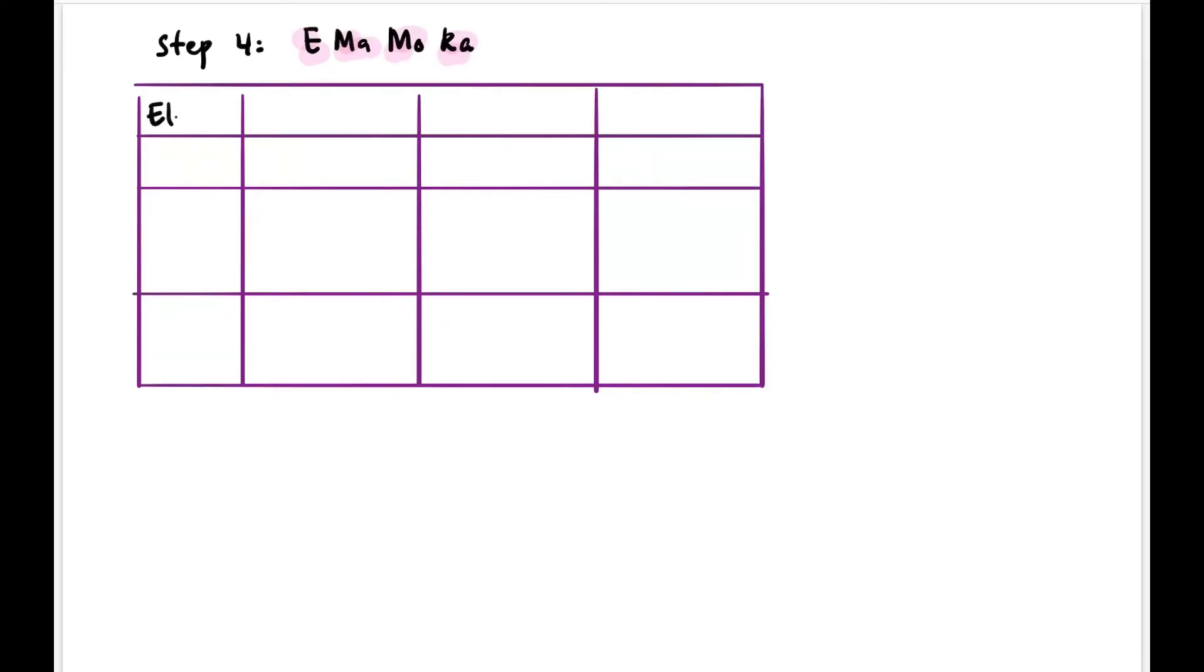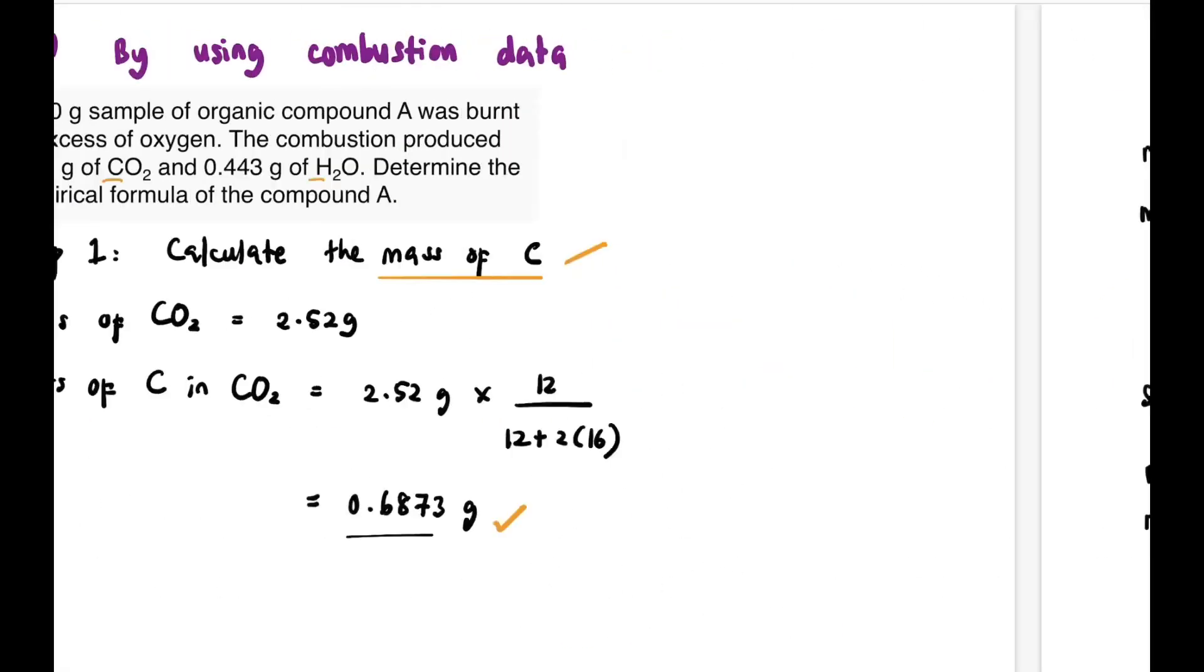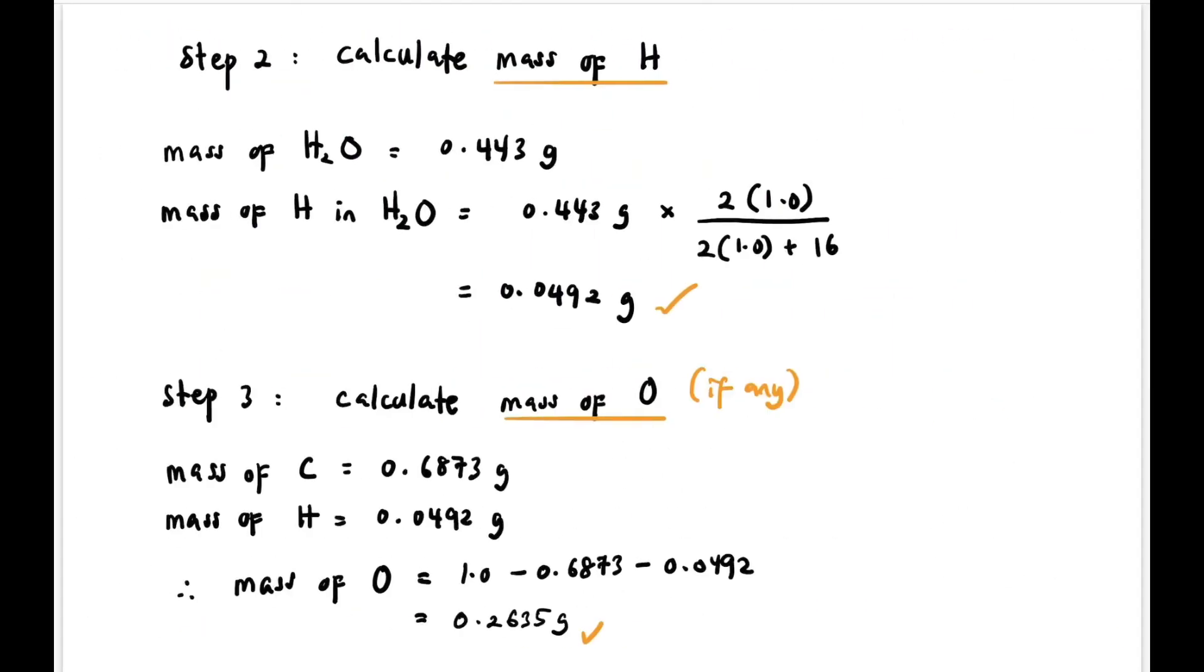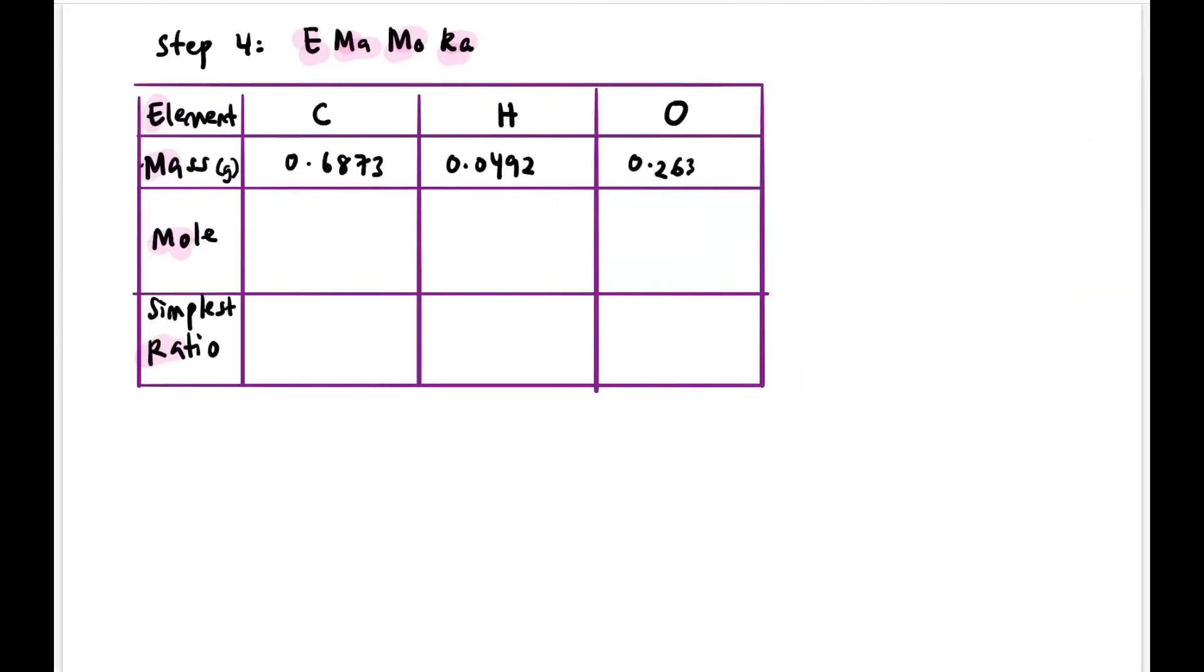Let's move to the final step. Go back to EMAMORA to find empirical formula. As usual, EMAMORA: element, mass, mole, and ratio. The elements in this compound are carbon, hydrogen, and oxygen. We enter all their values. This is the value for hydrogen and 0.2635 for oxygen. Now we calculate moles as usual, dividing by the molar mass for each atom from the table of relative atomic mass. The mole value for carbon is 0.0573 moles, hydrogen 0.0492 moles, and oxygen 0.0165 moles.